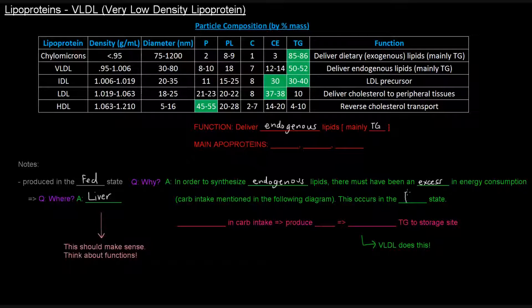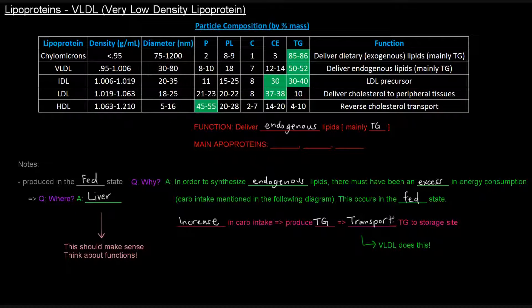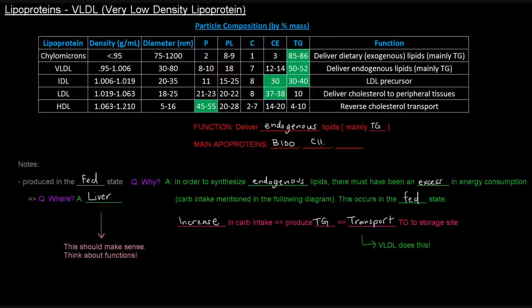This occurs in the fed state. So if you have an increase in carb intake, you will produce triglycerides. And these triglycerides that you produce, you need to transport to the storage site. VLDL is the lipoprotein that transports these endogenously synthesized triglycerides to the storage sites. The apoproteins that are part of VLDL are B100, C2, and E.